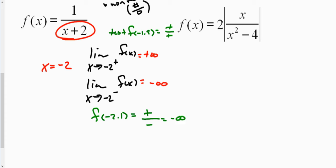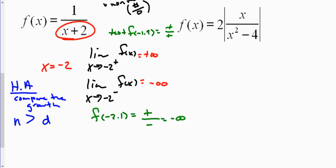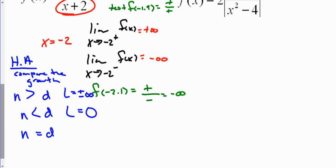Now we can check out the horizontal asymptotes. For a review: to find horizontal asymptotes, we compare the growth of the numerator versus the denominator. If the numerator's growth is greater than the denominator's, the limit diverges to positive or negative infinity. If the numerator's growth is less than the denominator's, we approach zero. When they grow at the same rate, the limit equals the leading coefficient ratio. Horizontal asymptotes are found by taking the limit as x goes to infinity.